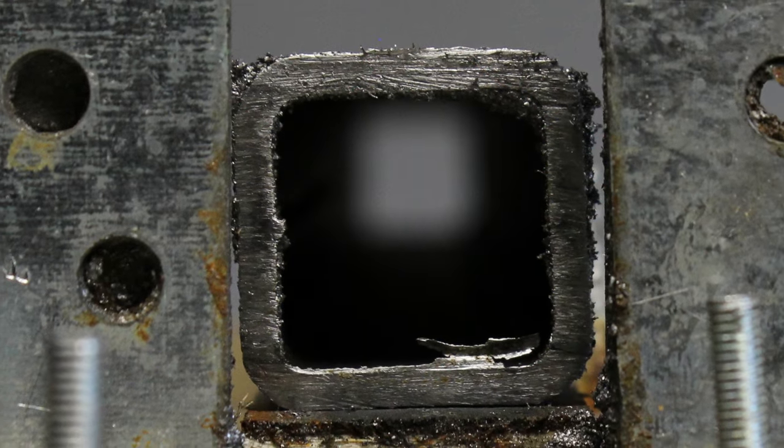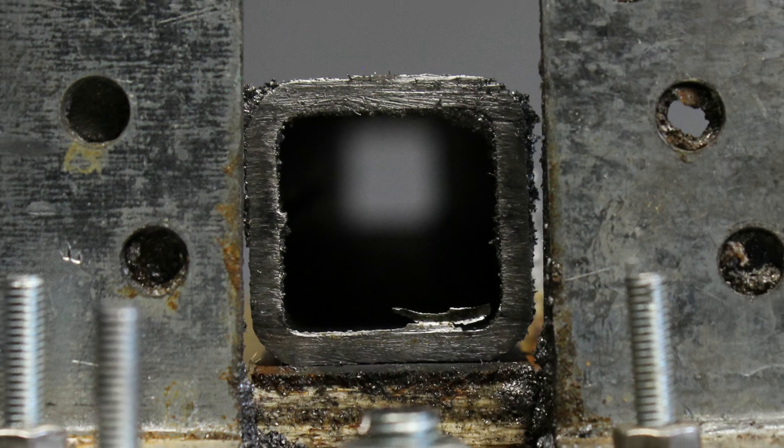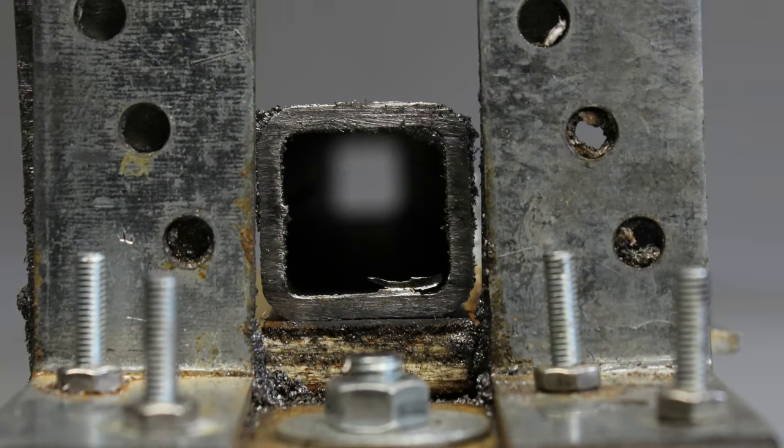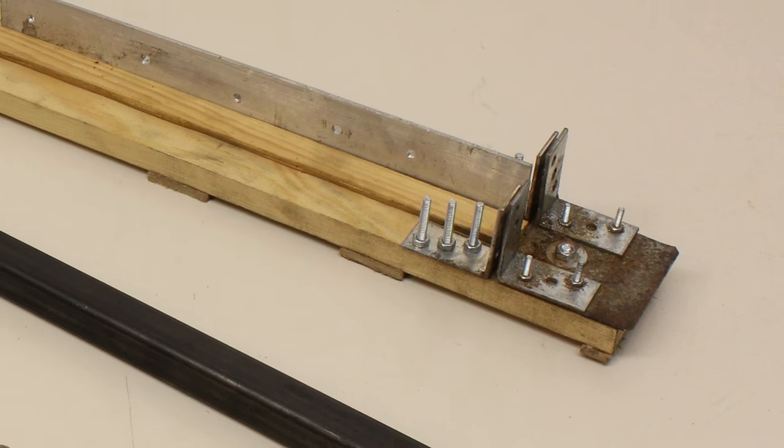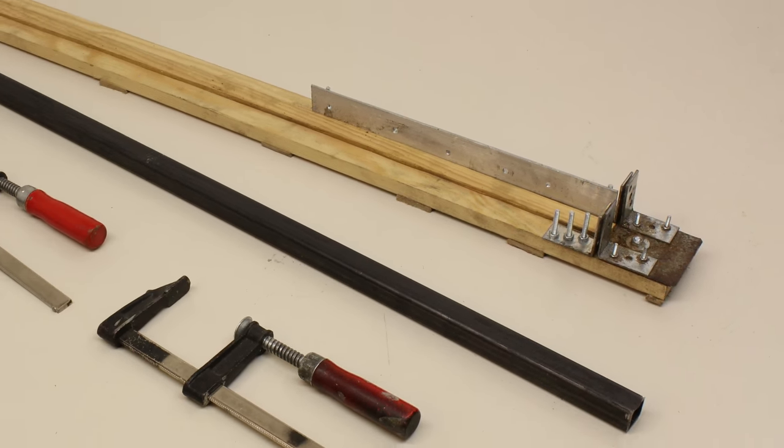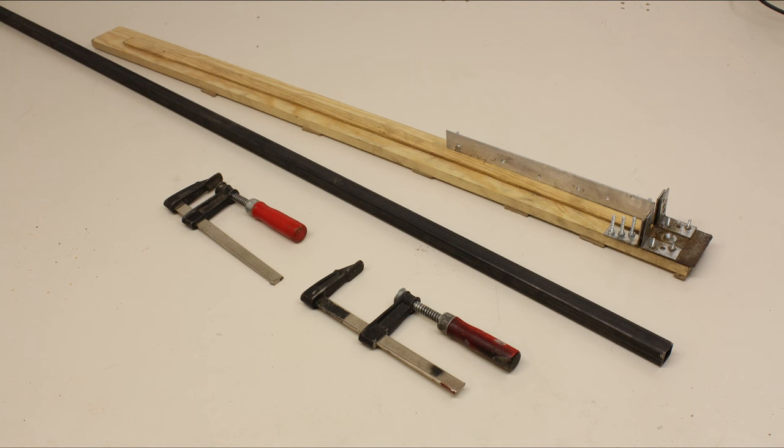The construction is made of iron square tubes with an edge length of 20mm and 2mm wall thickness. With wooden stripes, one aluminum and four iron angles you can build a guide for accurate sawing cuts.